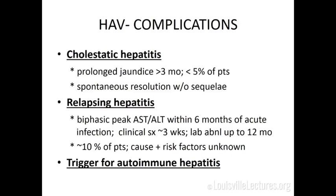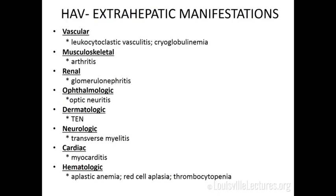Hepatitis A, like many viruses, can be a trigger for autoimmune hepatitis — patients with autoimmune hepatitis were found to have had a preceding hepatitis A infection. Beyond hepatic manifestations, there are extra-hepatic manifestations described in case reports including transverse myelitis, aplastic anemia or thrombocytopenia, and vasculitis. We don't typically think of these with hepatitis A. Also, remember that hepatitis A, B, and C are very different — don't lump them together, as clinical course and management are all very different.